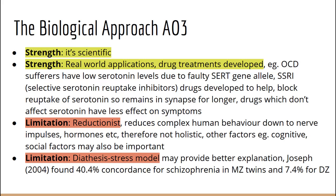A criticism of the biological approach is that it is reductionist. This means that complex human behavior is being reduced down to a few factors — in this case, genes, neurochemicals, and hormones. This is a problem because all other possible factors are ignored, such as cognitive, emotional, and cultural factors, which could influence behavior just as much. Therefore, a more holistic approach is required.